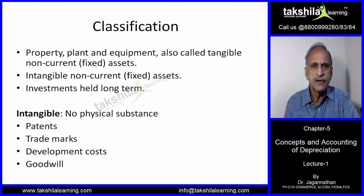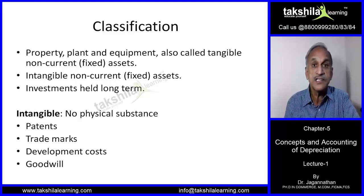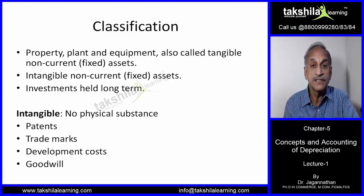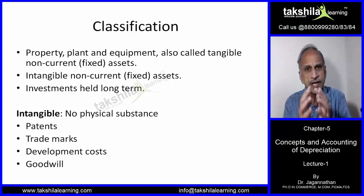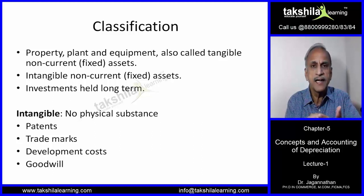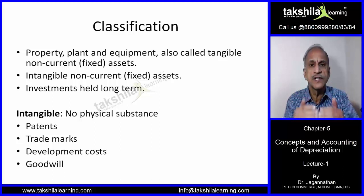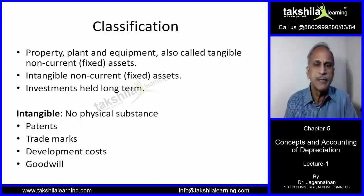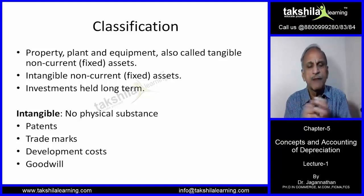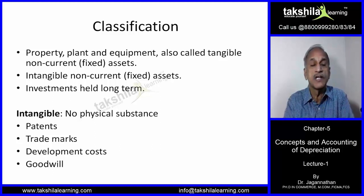Trademarks are the brand images of a particular entity, which are registered so that they are exclusively used for the products of that entity — nobody else can copy the trademark. Examples include Reliance, Tata, Pfizer, Infosys, Nestle, Nescafe, ITC, Maggie, and many others. If someone were allowed to copy a trademark, the customer could be fooled. So a trademark is an asset because you do not allow anyone else to use it.